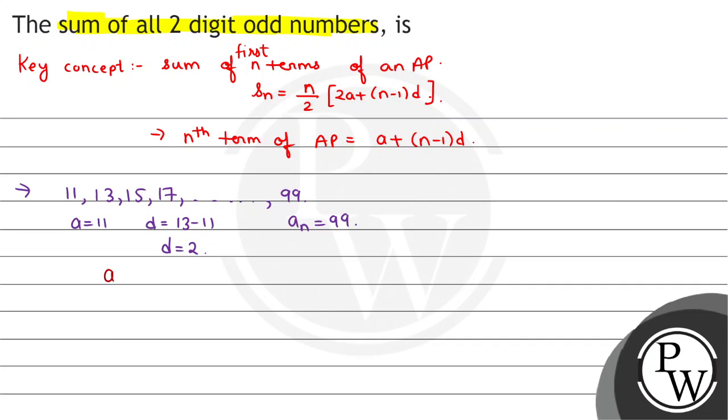Using an = a + (n-1)d: 99 = 11 + (n-1)×2. So 99 - 11 = 88 = (n-1)×2. Therefore (n-1) = 88/2 = 44, which gives n = 45. Now we'll find Sn.